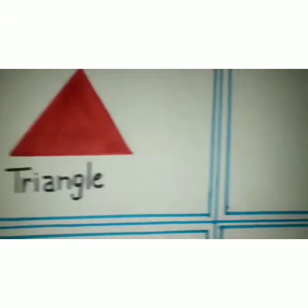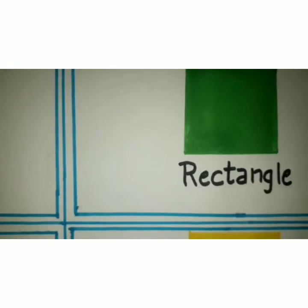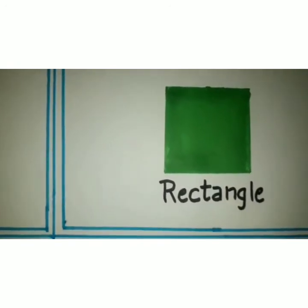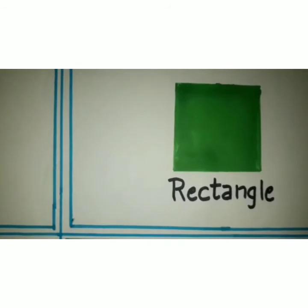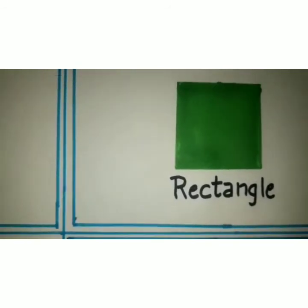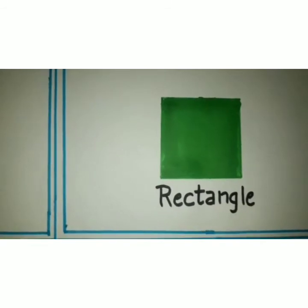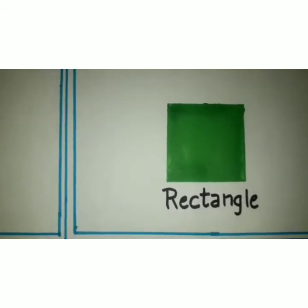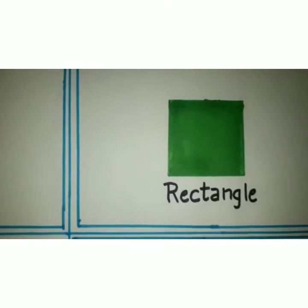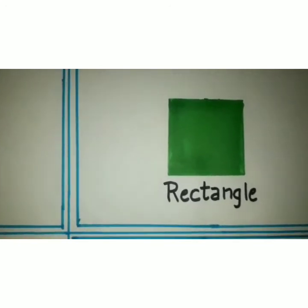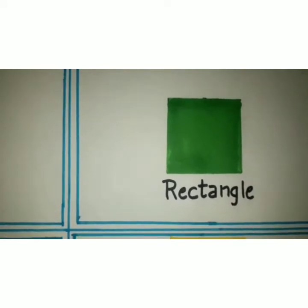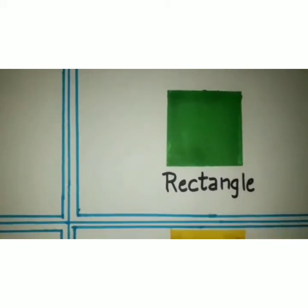Third, the rectangle. A rectangle is a parallelogram with four right angles, making it a special type of parallelogram. Thus, a rectangle has all the properties of a parallelogram: opposite sides are congruent, opposite angles are congruent, and diagonals bisect each other.